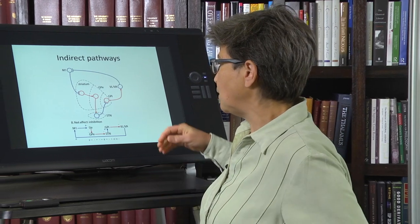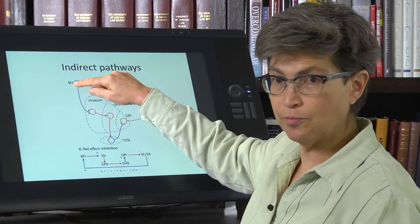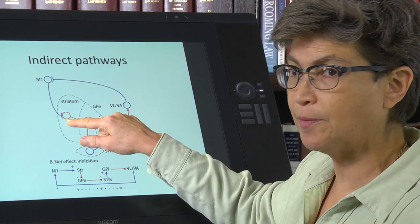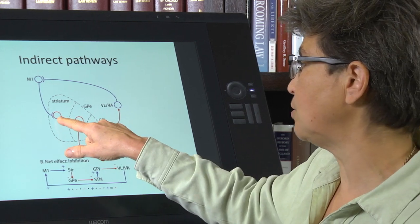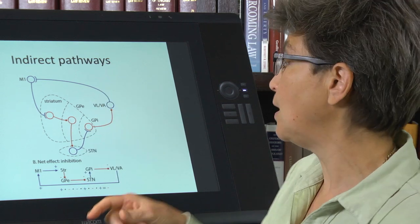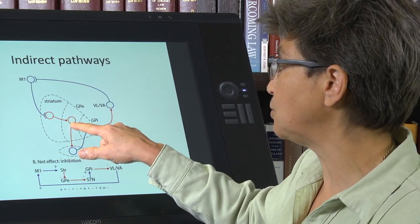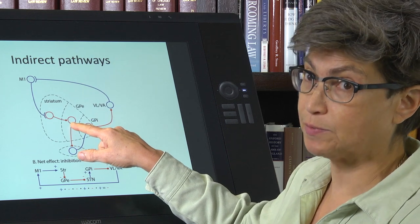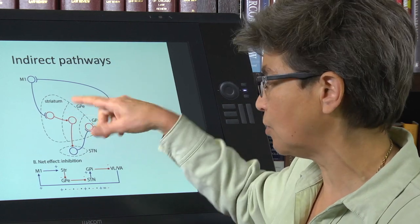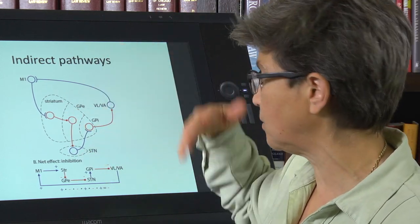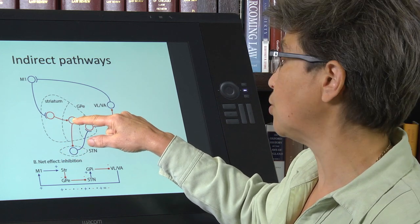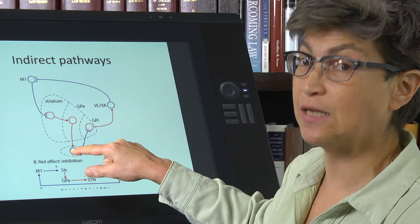The indirect pathway we're going to look at starts in motor cortex and projects — these are neurons that project into the striatum. Here, instead of contacting striatal cells that project to the globus pallidus internal, which is the case for the direct pathway, the striatal neurons that are contacted actually project into the external globus pallidus. All of these cells are medium spiny neurons. This is all lots of GABA happening here, so the striatal neurons are inhibiting these globus pallidus external cells, which are in turn inhibiting subthalamic neurons.